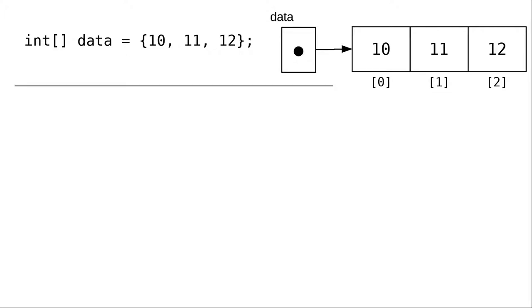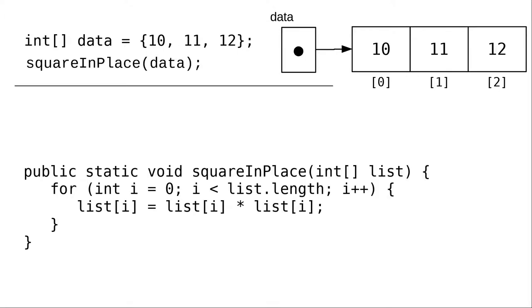How do we pass arrays to methods? Let's set up an array and call a method that will square each of the entries in that array.